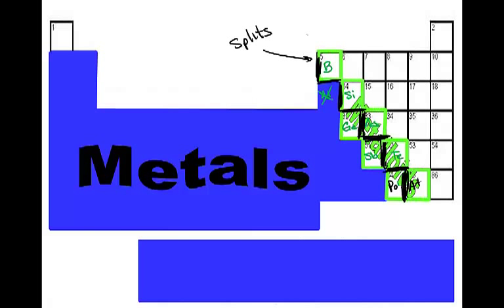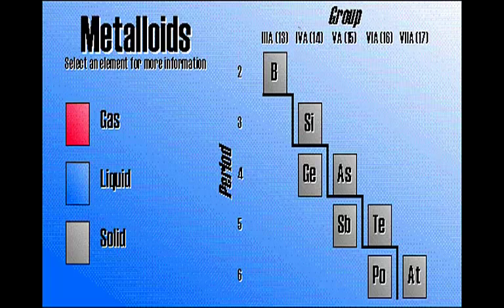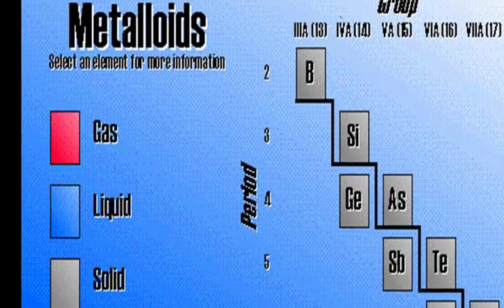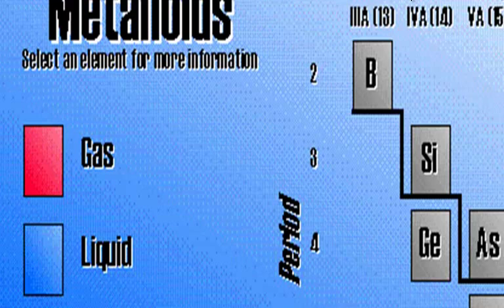But so here are metalloids. These elements tend to have three to five electrons in their outer shell and have properties of both metals and non-metals. So sometimes they'll behave as a metal, sometimes they'll behave as a non-metal.